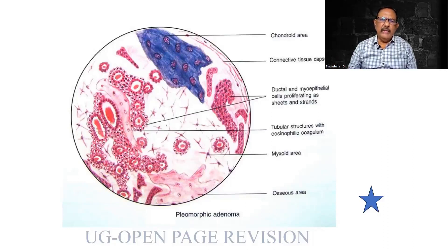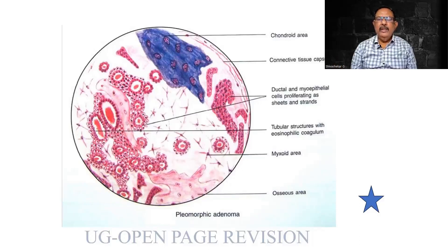The tumors of the salivary gland can be briefly mentioned. There are different types, but a few key ones to mention: there can be a benign monomorphic adenoma or a pleomorphic adenoma, and then there can be the malignant such as the mucoepidermoid tumor. For each: only the gross appearance, where does it occur, what is the microscopic feature — just two points for each.